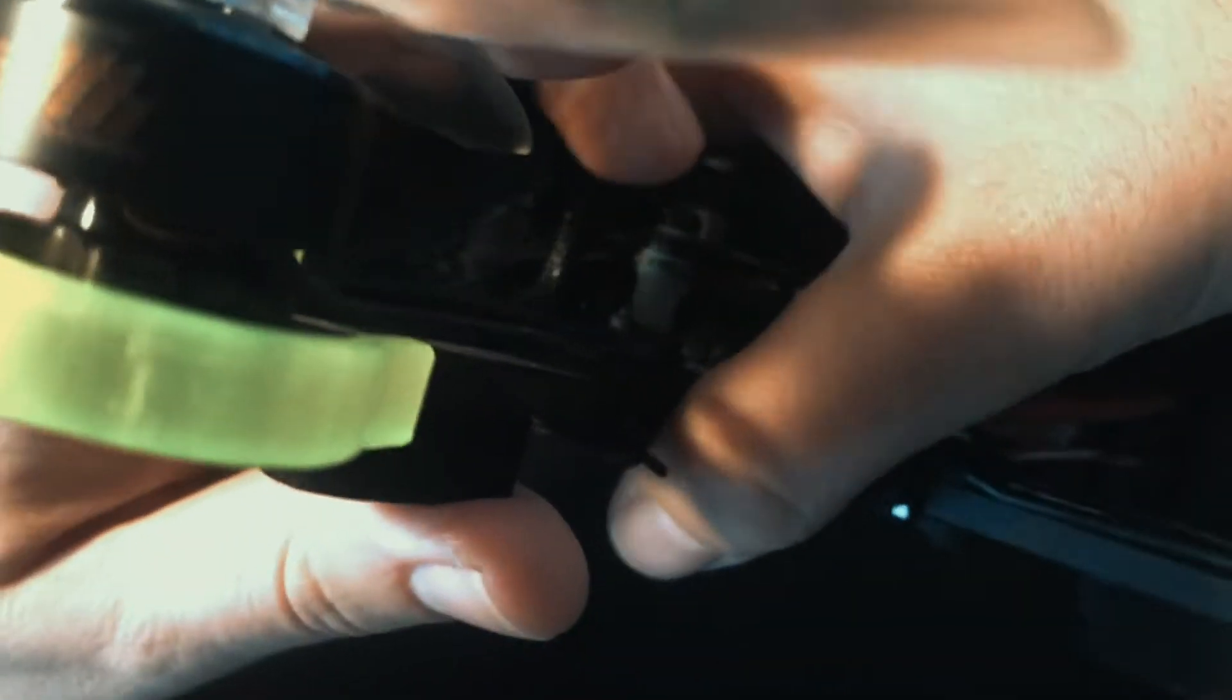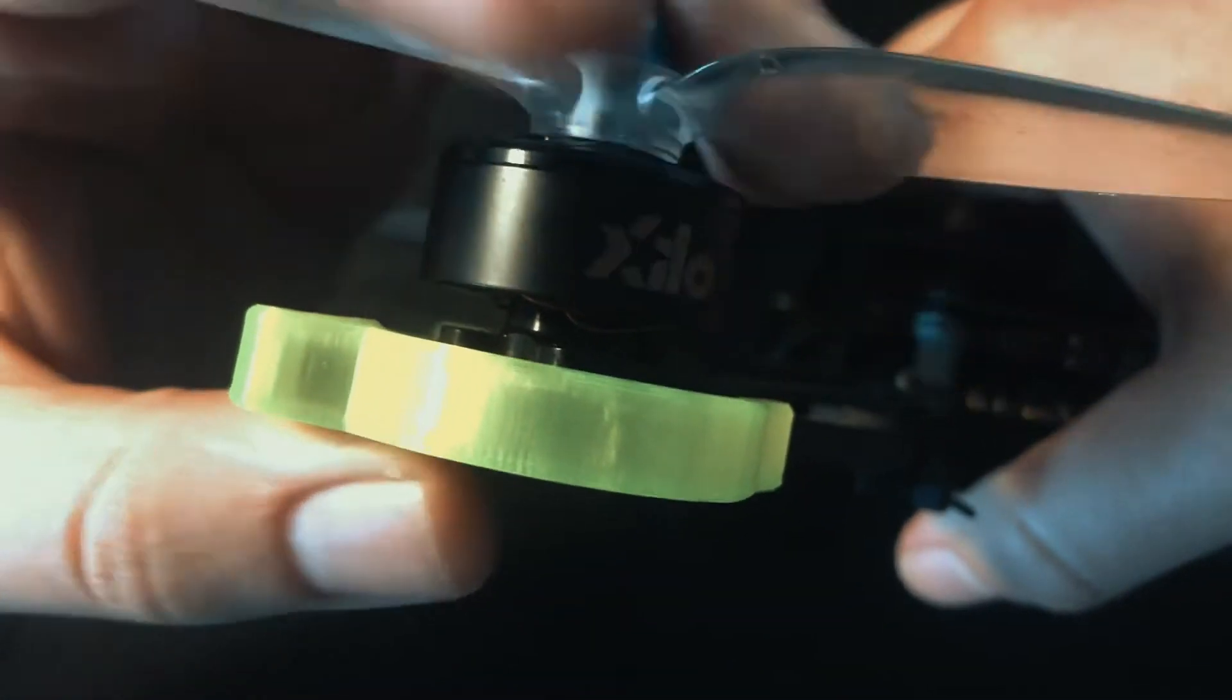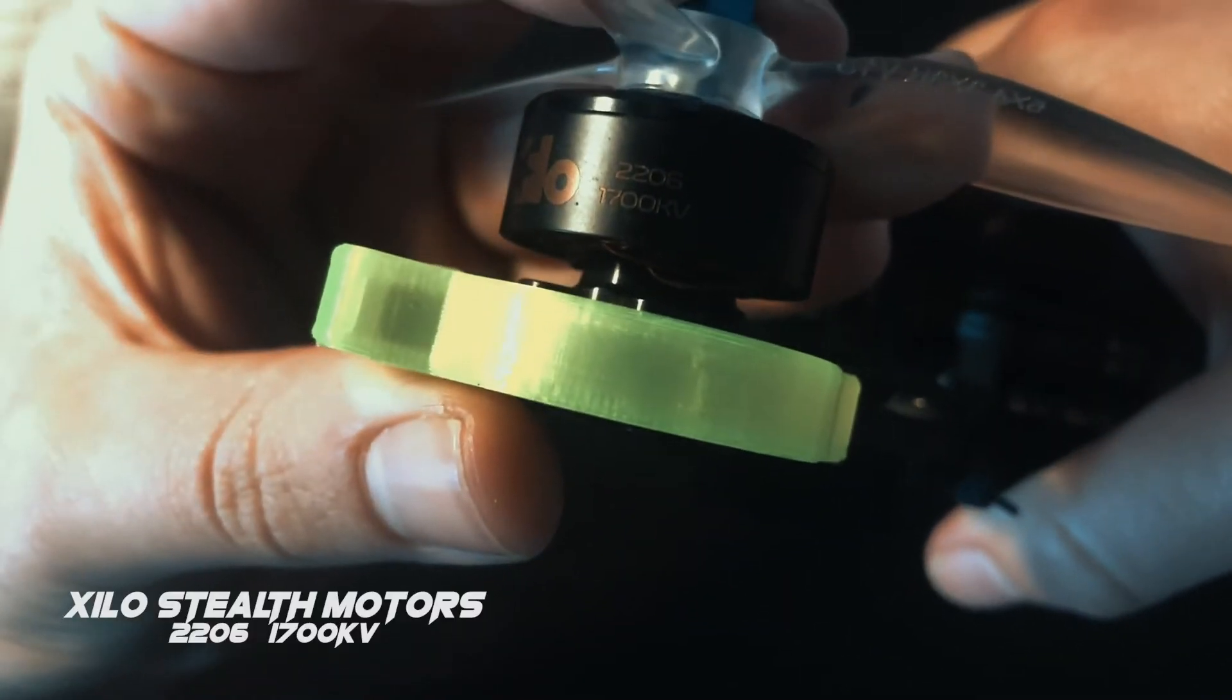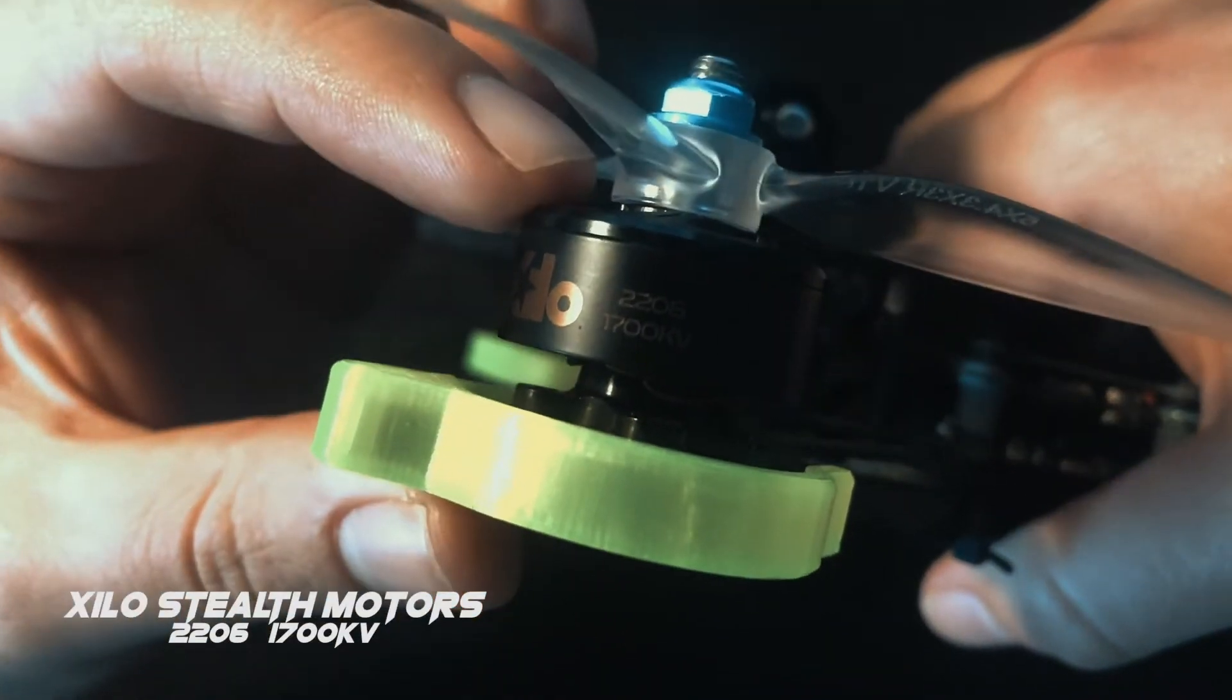What's up guys, welcome to another one minute review. In this one I'm going to be going over the Zylo stealth motors that you can get on getfpv.com. These are the 2206 1700 kV motors and I love these things.